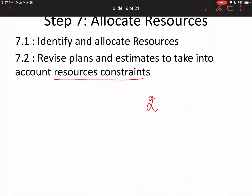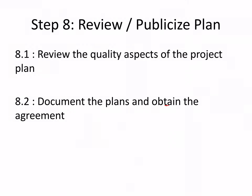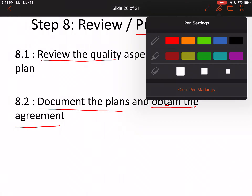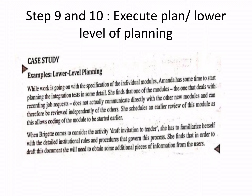Step eight: review and publicize the plan. Step 8.1: review the quality aspects of the project. Step 8.2: document the plans and obtain agreement between all the different parties and stakeholders. Publicizing means obtaining a documented agreement so there is no ambiguity later — everybody, all stakeholders, must agree to the plan.